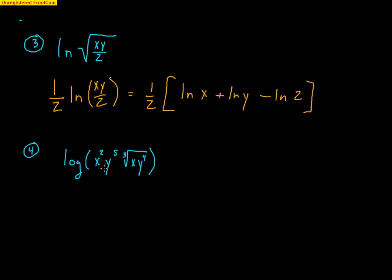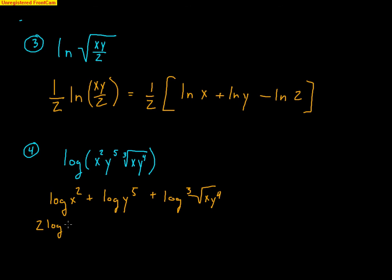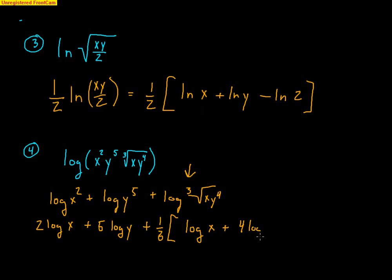One last expansion problem: log of x squared times y to the fifth times the cubed root of (xy to the fourth). First, separate the multiplication with addition: log of x squared plus log of y to the fifth plus log of the cubed root of xy to the fourth. Bring down the 2: 2 log x. Bring down the 5: 5 log y. For the cubed root term, write it as a one-third power in front of brackets containing log x plus 4 log y. You could also distribute: one-third log x plus four-thirds log y.